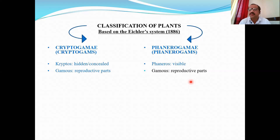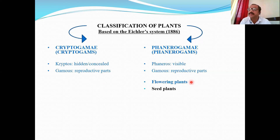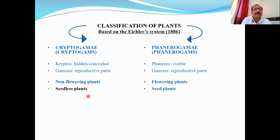In higher plants, the reproductive part visible to the naked eye is the flower. Plants in which the reproductive part is visible as a flower are called phanerogams — also called flowering plants. Where the reproductive part is hidden and not visible, those are non-flowering plants. When a flower is present, seeds are also present after fertilization, so phanerogams are also called seed-bearing or seed-producing plants, while non-flowering plants are seedless — known as cryptogams.